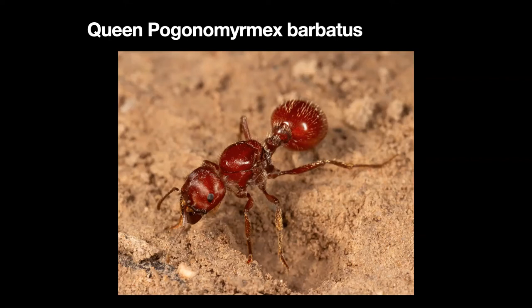Ants are a favorite subject in lots of laboratories and there are all kinds of stories about them. In laboratories they seldom live as long as in the wild, but you'll still have many species of ants in laboratories that live 20 years or longer — the queens, that is. Workers of some species can live two or three years. Here's a worker Pogonomyrmex barbatus.